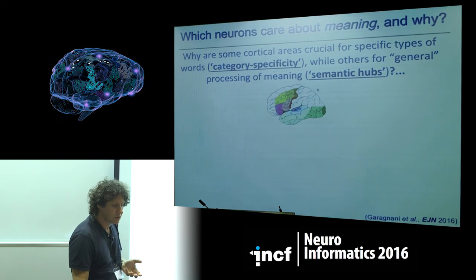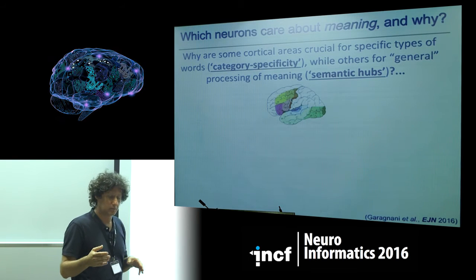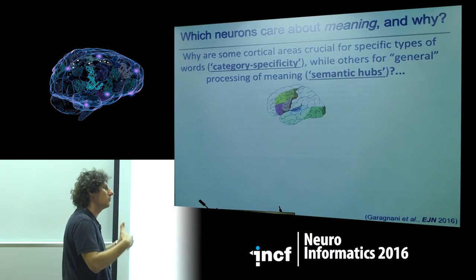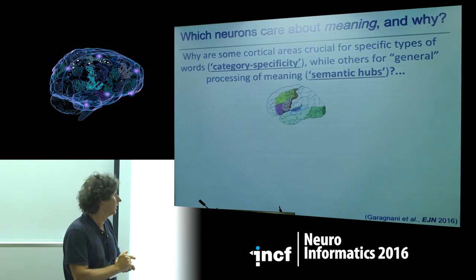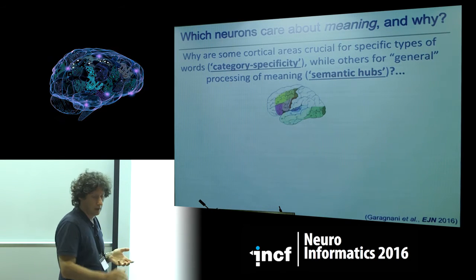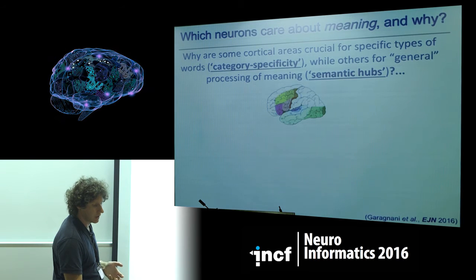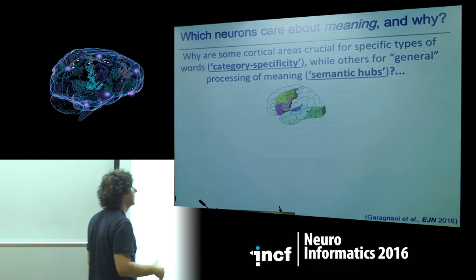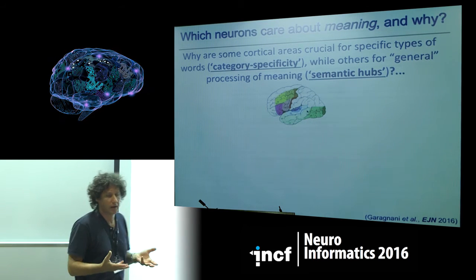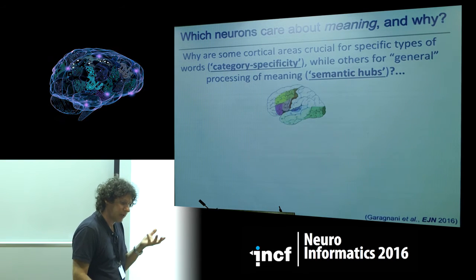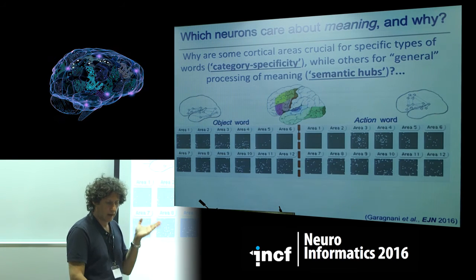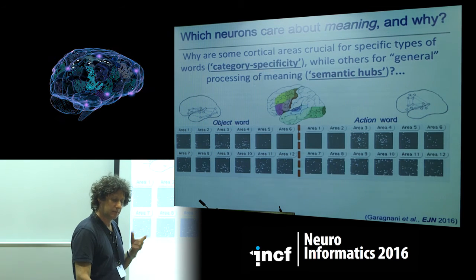There is also an issue: other brain areas, known as semantic hubs — such as inferior prefrontal cortex, anterior temporal pole, and posterior middle temporal gyrus — seem active regardless of which semantic category is being processed. These hubs appear to care for general semantics. Our model's dissociation findings help explain the presence of both category-specific and general semantic areas.